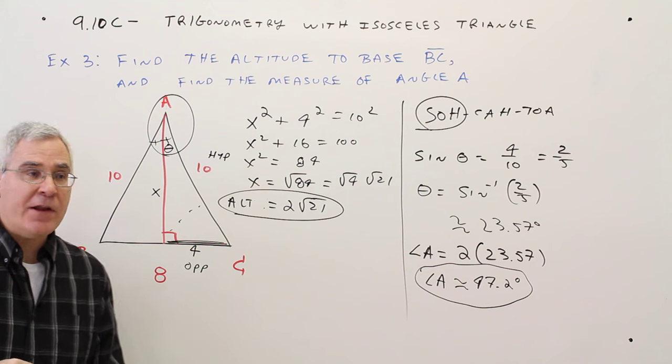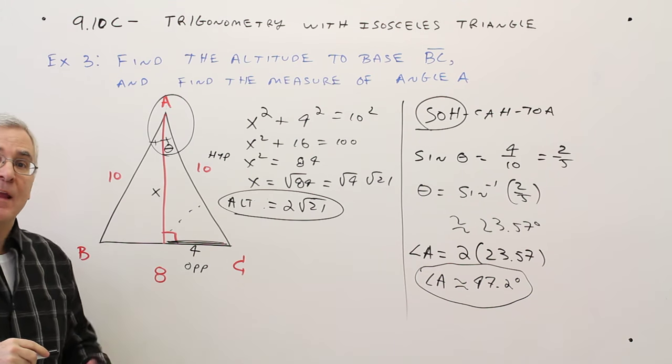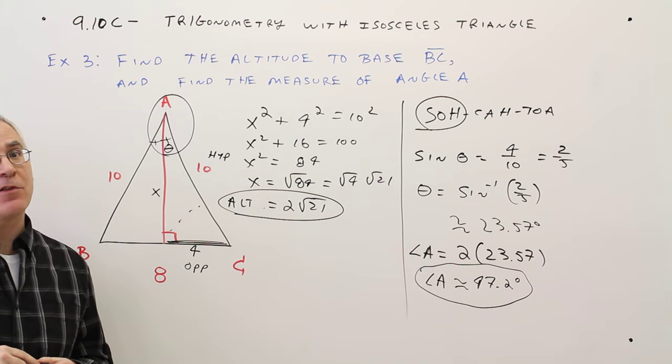So there you have it. How to use trigonometry in conjunction with an isosceles triangle. We'll see you next time.